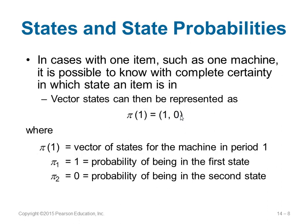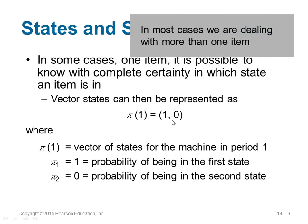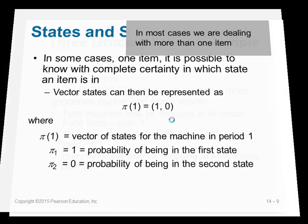In some cases you know with certainty that you are in a specific state. In that scenario you can say phi of 1 equals 1 comma 0, meaning you are exactly in the first state and the probability of being in the second state is 0. But in most cases you will have more than one state to discuss about.